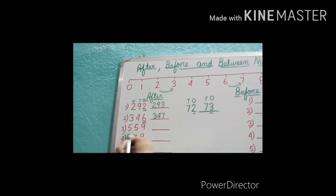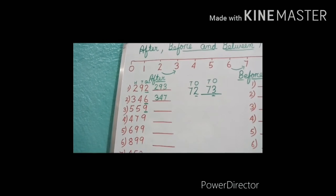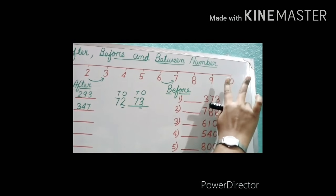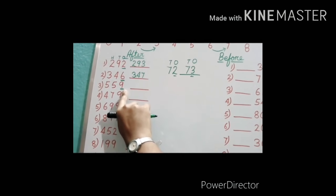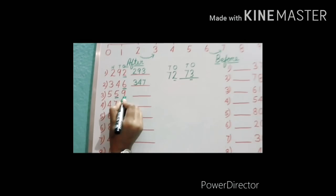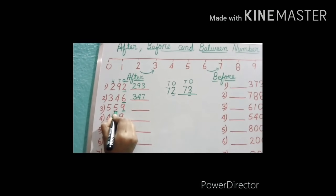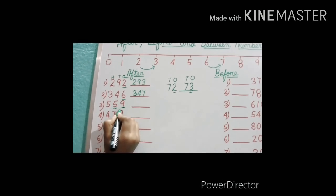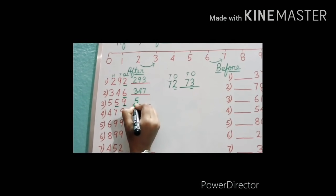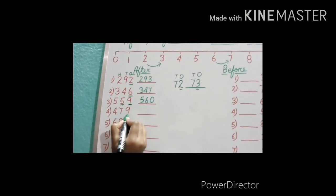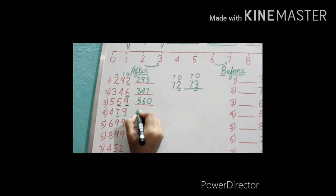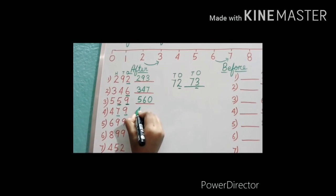Question number 3: ones place digit is 9. After 9 on the number line, what is the digit? 10 — it is a 2-digit number. So when the ones place is 9, we will change the tens place digit also. For 559: after 59 comes 60, so the answer is 560. Similarly, 479: ones place is 9, so we change the tens place — the answer is 480.